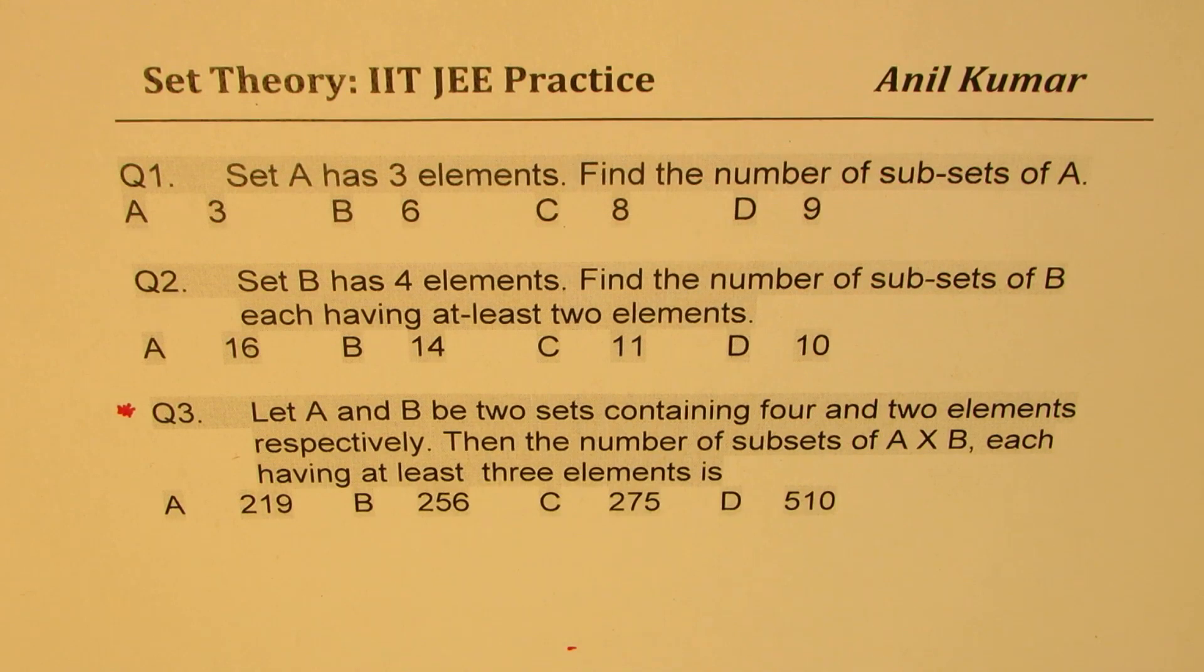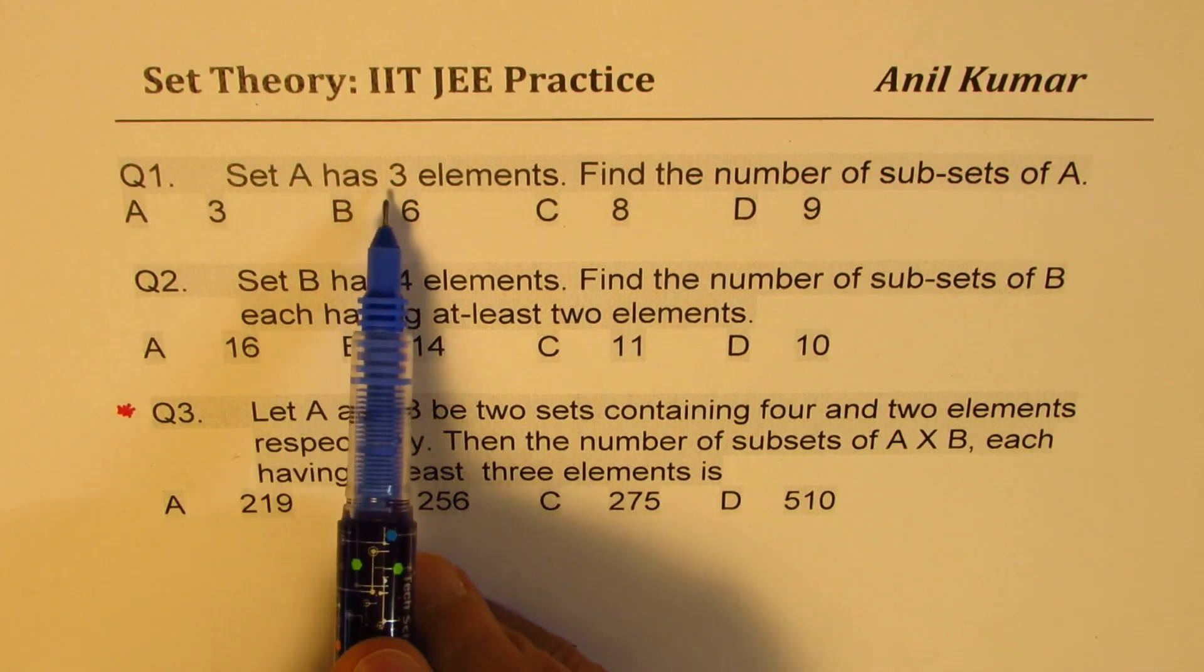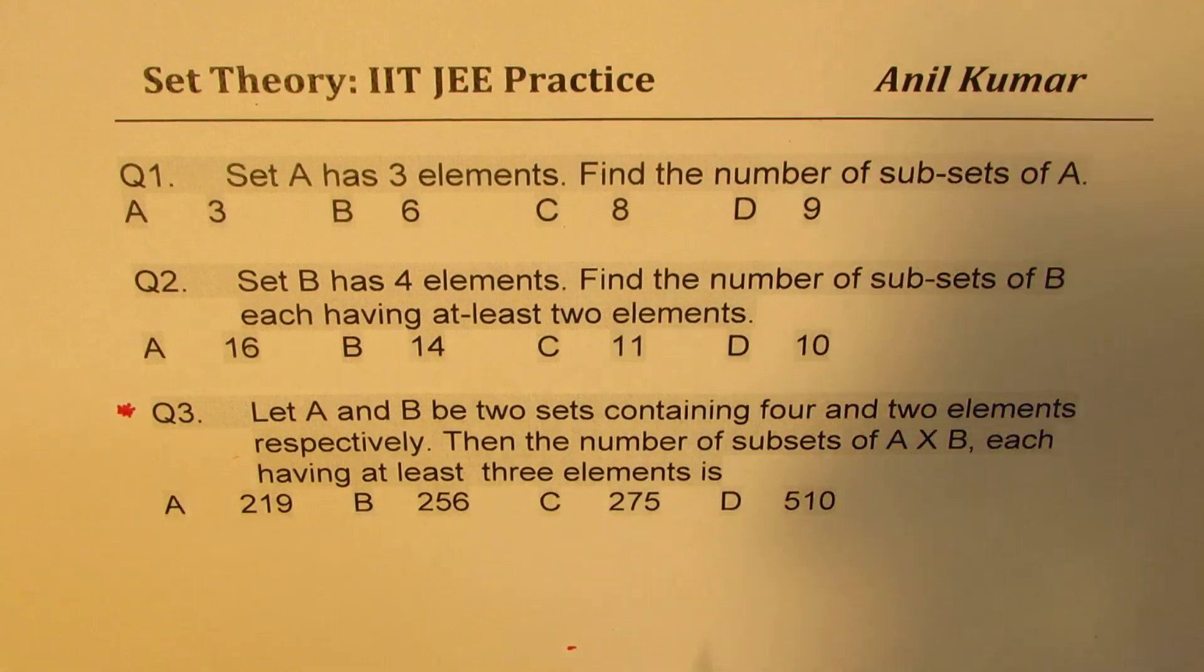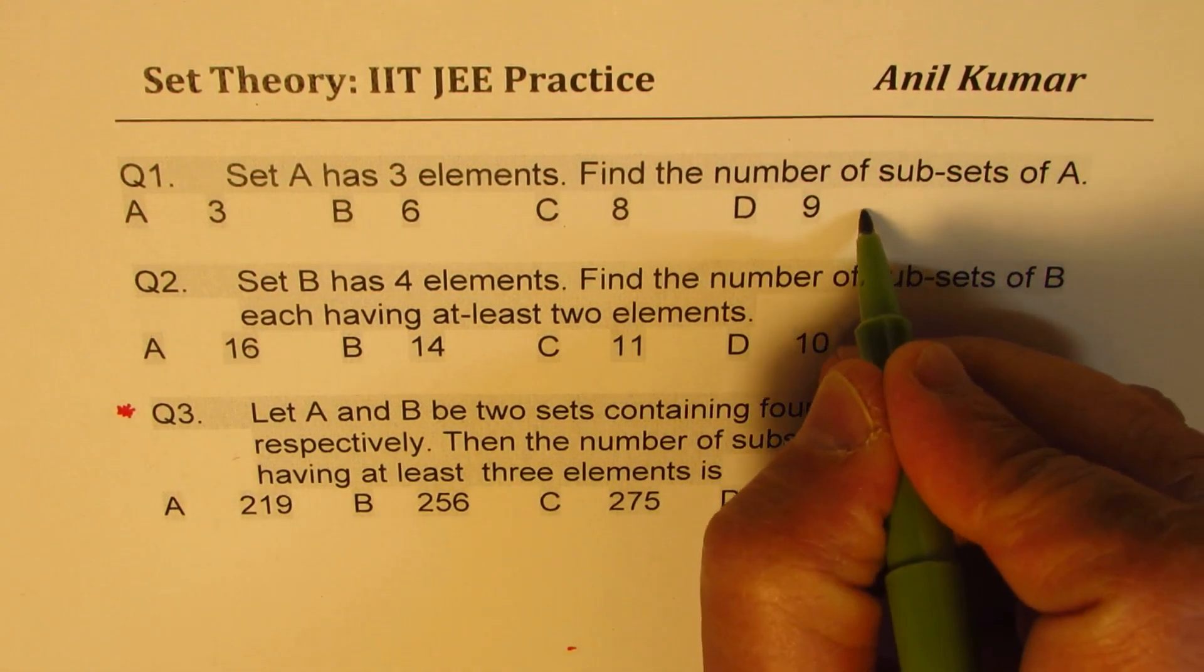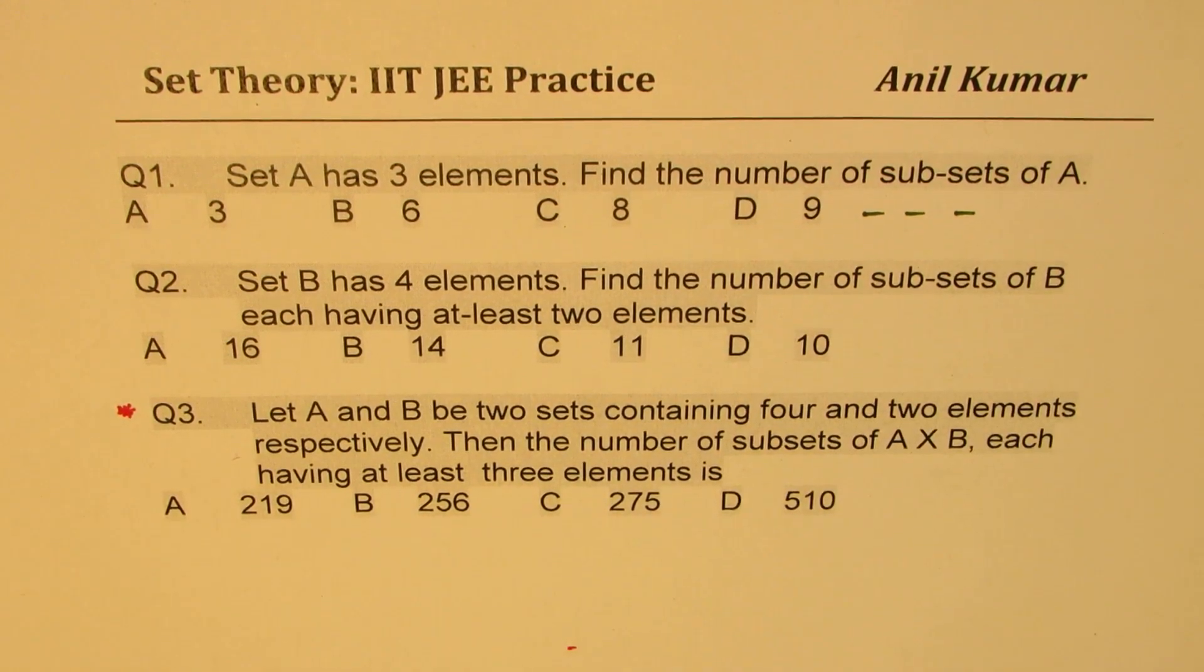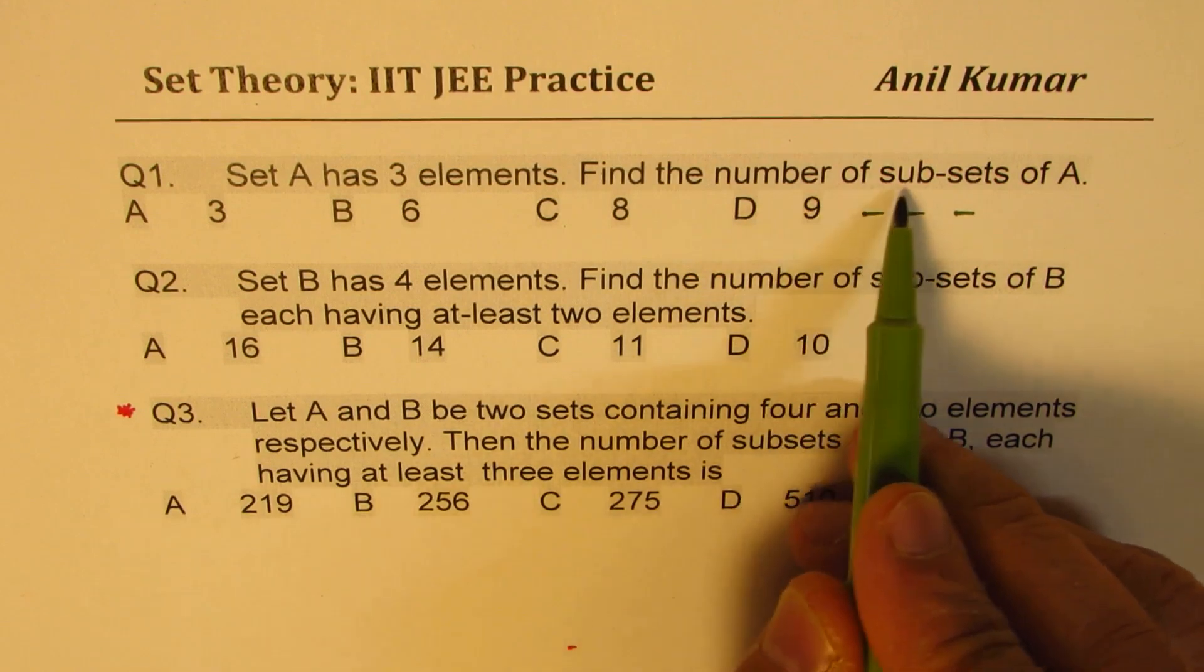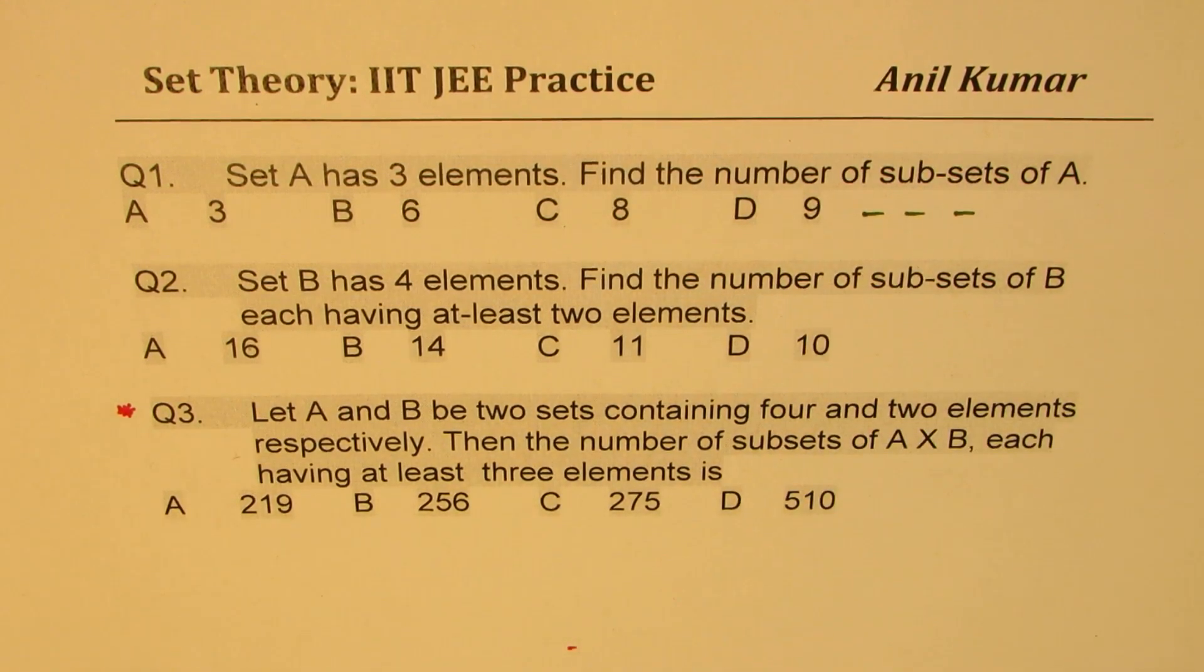Now let's begin with the concepts. Question number one: Set A has three elements. So let us say the three elements are, let's keep the elements kind of like this. So these are the three elements which set A has. We need to form the number of subsets. How do we do so?